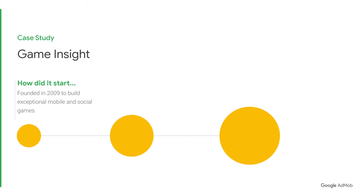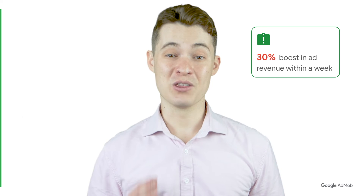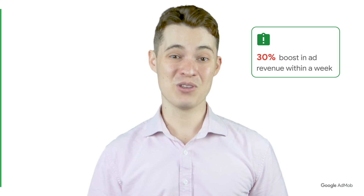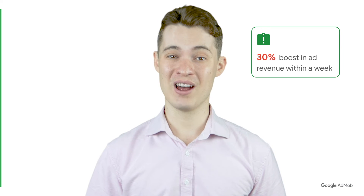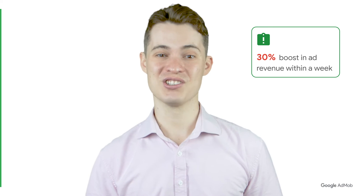Let's take a look at an example of a developer who saw success with Smart Segmentation. Game Insight was founded in 2009 with the aim of building exceptional mobile and social games. Despite finding global success, they needed new ways to boost revenue in their hardcore strategy game, Survival Arena. They decided to implement Smart Segmentation on their interstitial ads and frequency caps for new players, and observed a 30% boost in ad revenue within a week. After seeing no compromise on their IAPs and engagement, they decided to expand Smart Segmentation to their other titles.